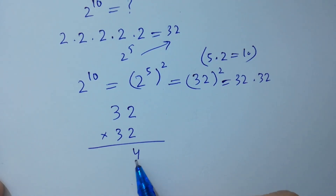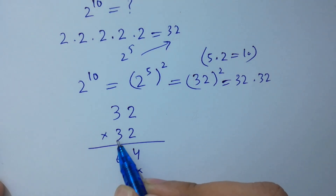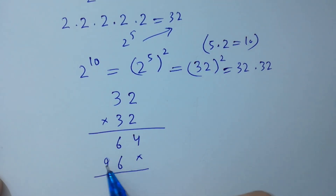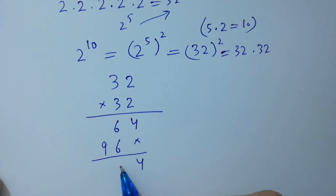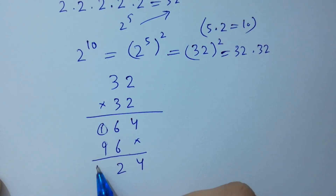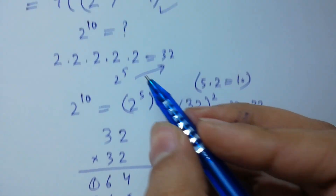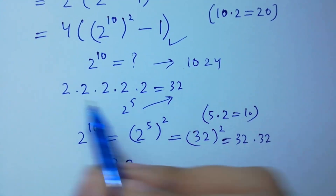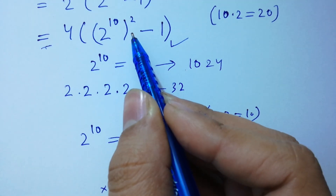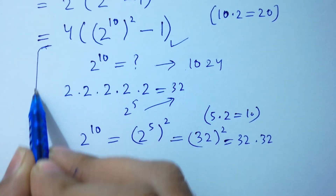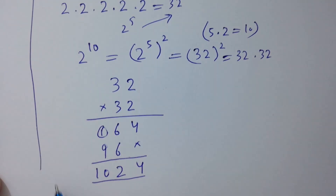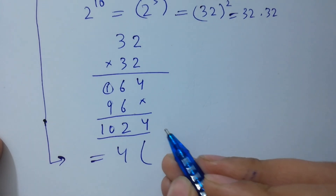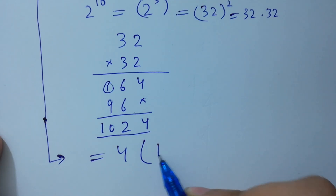Multiplying 32 times 32: 2 times 2 is 4, 3 times 2 is 6, 3 times 2 is 6, 3 times 3 is 9; we get 4, carry 1, 9 plus 1 gives 10. So 2 to the power 10 equals 1024. Therefore the expression becomes 4 times (2 to the power 10) squared minus 1, which is 4 times 1024 squared minus 1.